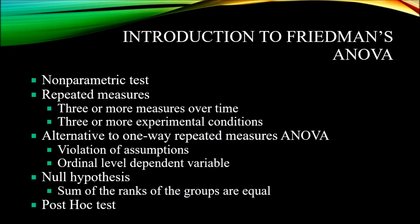Friedman's ANOVA is a non-parametric test, also known as a distribution-free test. It does involve repeated measures. We use Friedman's ANOVA when we have three or more measures over time or three or more experimental conditions.